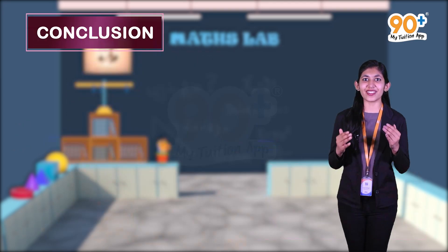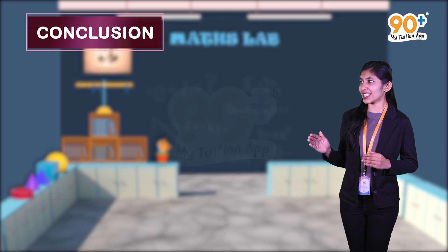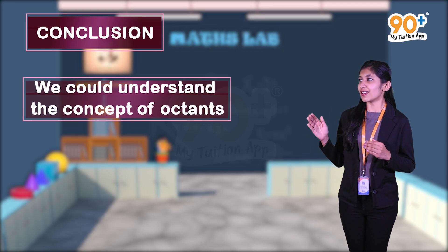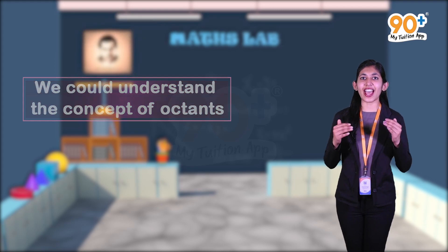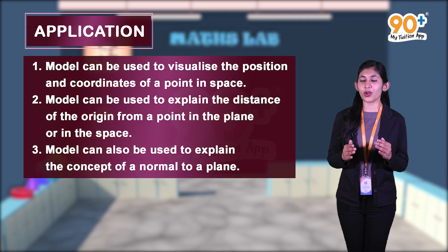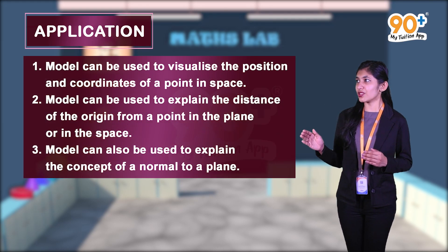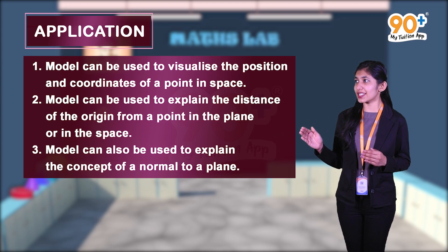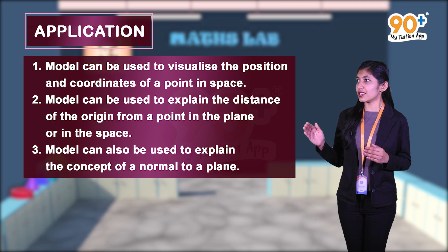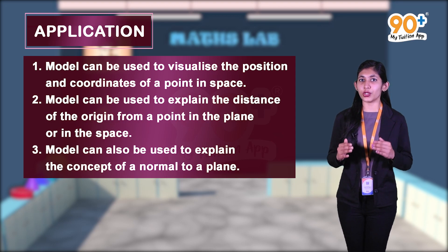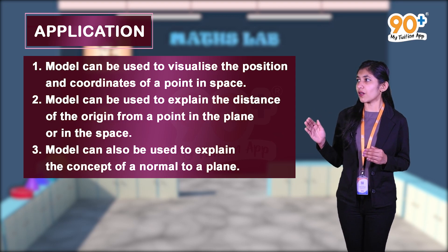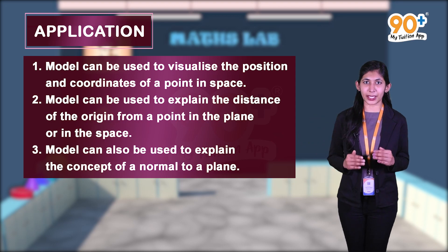Now we have the conclusion. Through this activity, we could understand the concept of octants. Finally, regarding applications: this model can be used to visualize the position and coordinates of a point in space and to explain the distance of the origin from a point in the plane or in space. This model can also be used to explain the concept of a normal to a plane.